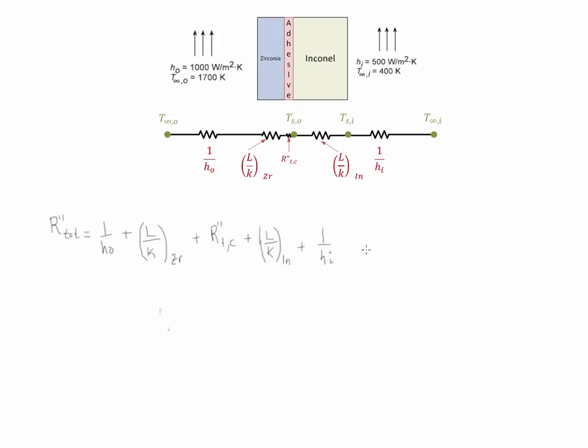The next step is to calculate the total resistance going through the system. Notice that we simply do an addition of all the resistances since it's a series circuit. We simply add the values and obtain the value of 3.69 times 10 to the negative 3 meters squared Kelvin over watts.